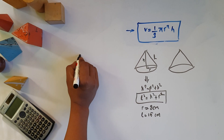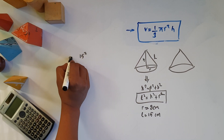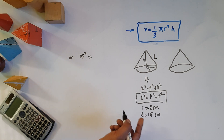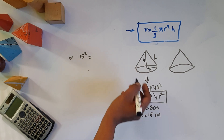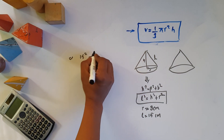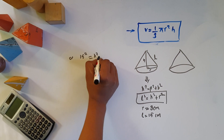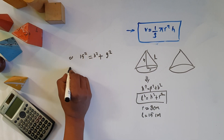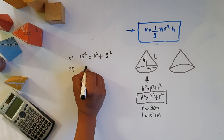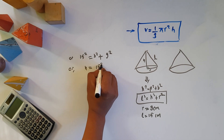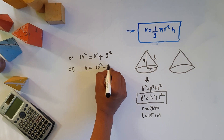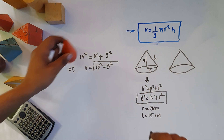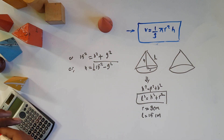So L squared equals H squared plus R squared. That is: 15 squared equals H squared plus 9 squared. Therefore H equals the square root of 15 squared minus 9 squared.